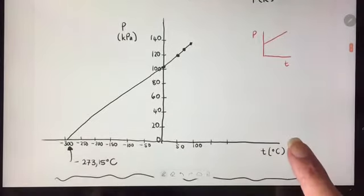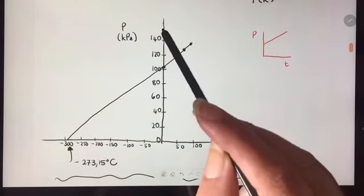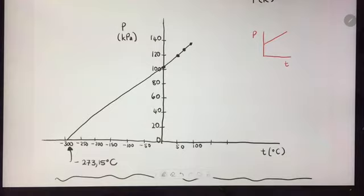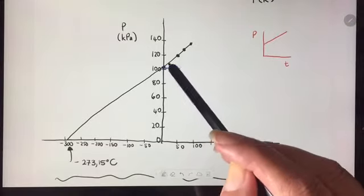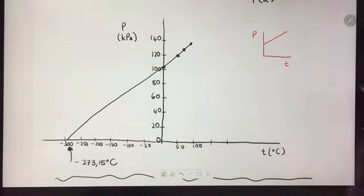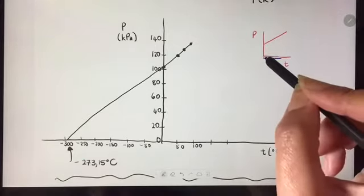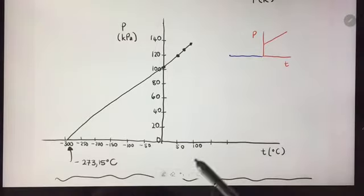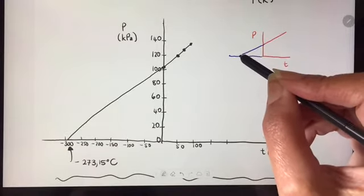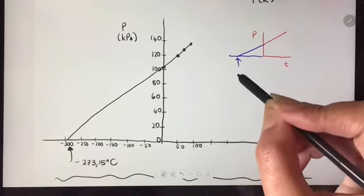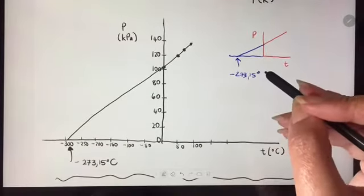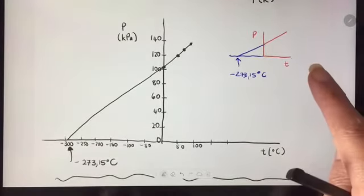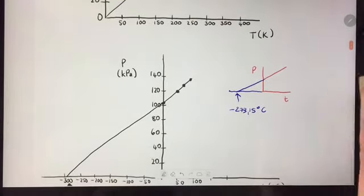If I draw the graph of pressure in kilopascals on my y-axis and temperature in degrees Celsius on my x-axis and plot those points, the graph ends up looking like that. You can then extend your x-axis so that you have negative temperature values in degrees Celsius. If I extend that, the value there is going to be negative 273.15 degrees Celsius, as you can see.